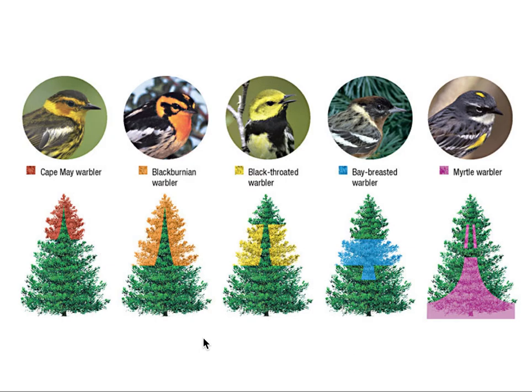However, they need to minimize competition because there are so many of them. What they do is resource partition — they divide up the tree into different areas, indicated with a shaded color, and they all live in a different part of the tree. This allows them to coexist with each other and places them out of direct competition. This is known as resource partitioning.